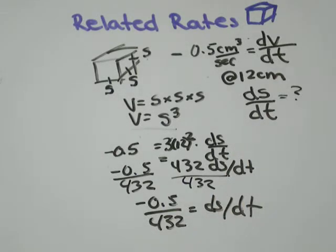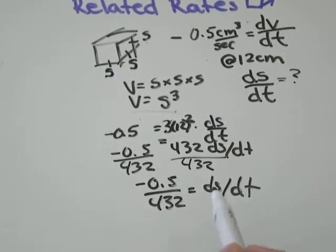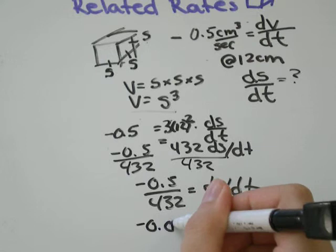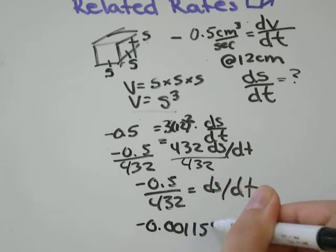So, so far so good. We have what we're trying to find on one side, and we have something without any variables on the other side. All we need to do is negative 0.5 divided by 432, and I get negative 0.001157.